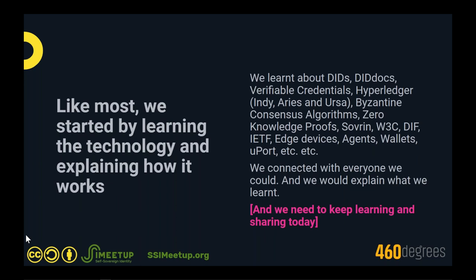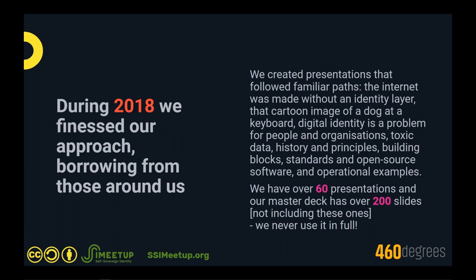For 460 Degrees, we started like most — trying to understand the technology underpinning self-sovereign identity. We learned about DIDs, DID docs, verifiable credentials, Hyperledger Indy, Aries, Ursa, Byzantine consensus, zero-knowledge proofs, Sovrin, W3C, and all the other elements of the SSI ecosystem. We really enjoyed connecting with people in the community. In 2018 we were using presentations many will be familiar with — talking about the internet not having an identity layer, the cartoon of a dog at a keyboard, toxic data, and so on.